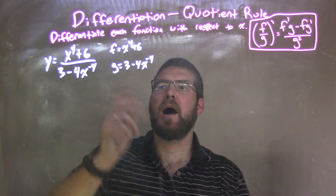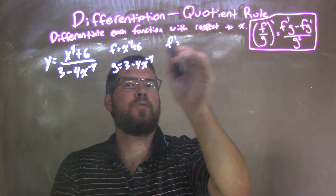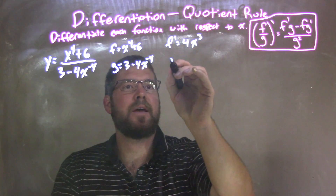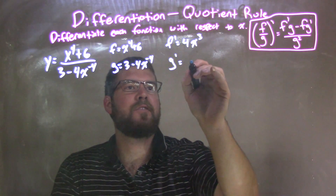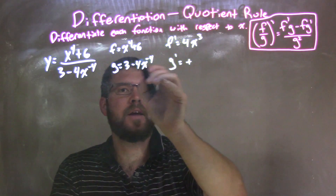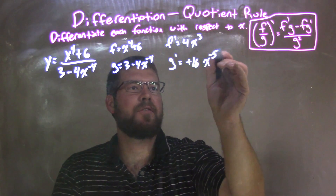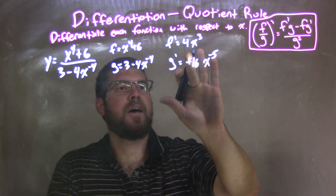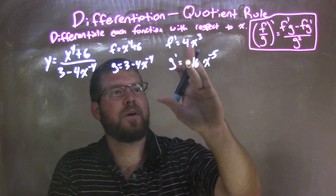Then from there, I'm going to find f prime. So f prime here is the derivative of f, which is 4x to the 3rd. And g prime here, the derivative of g, is going to be positive — remember, the negative comes down: negative times negative is positive, giving us 16x to the negative 5th power. So it's positive 16x to the negative 5th.